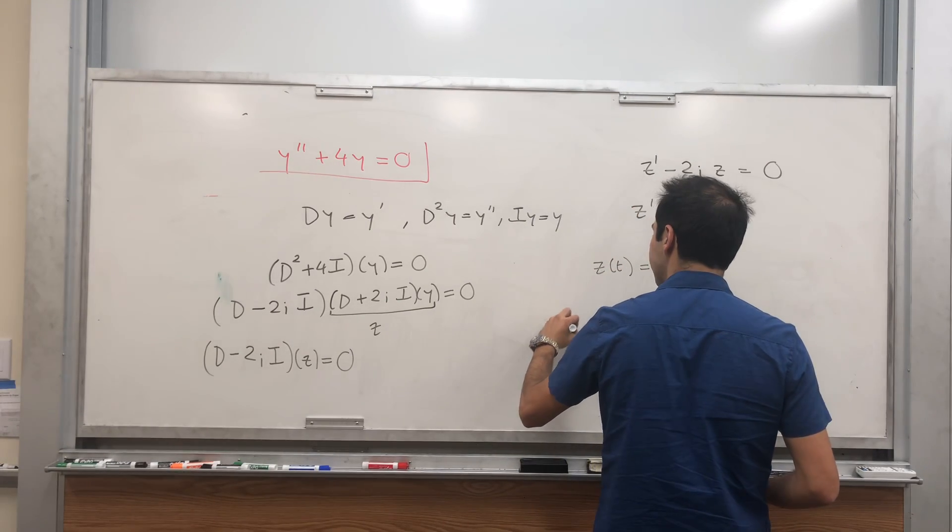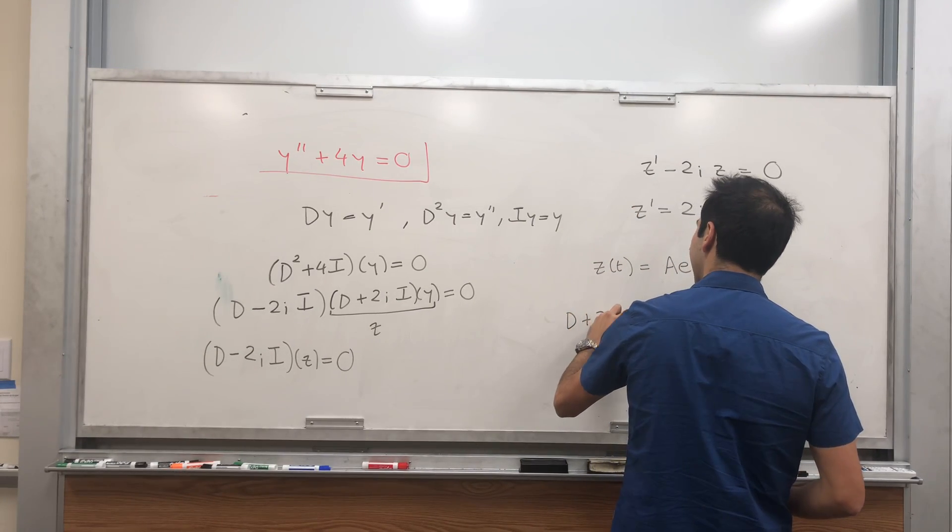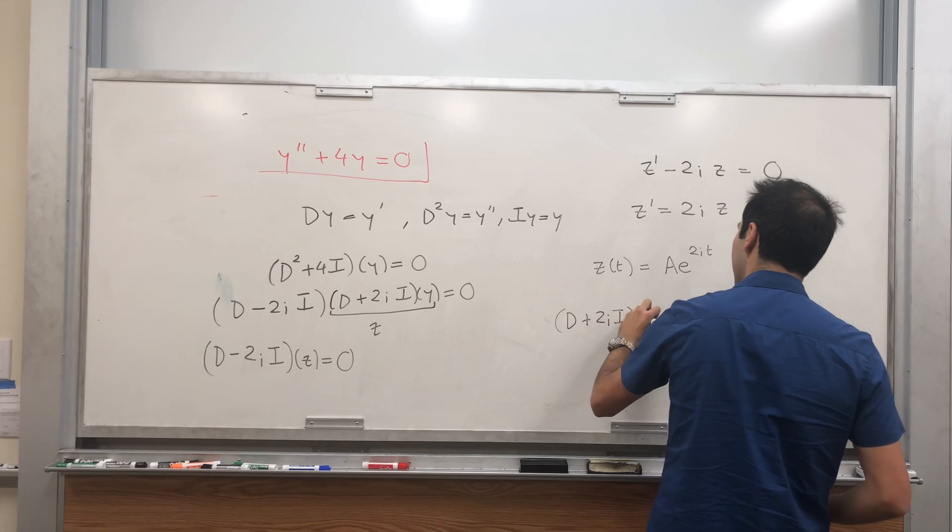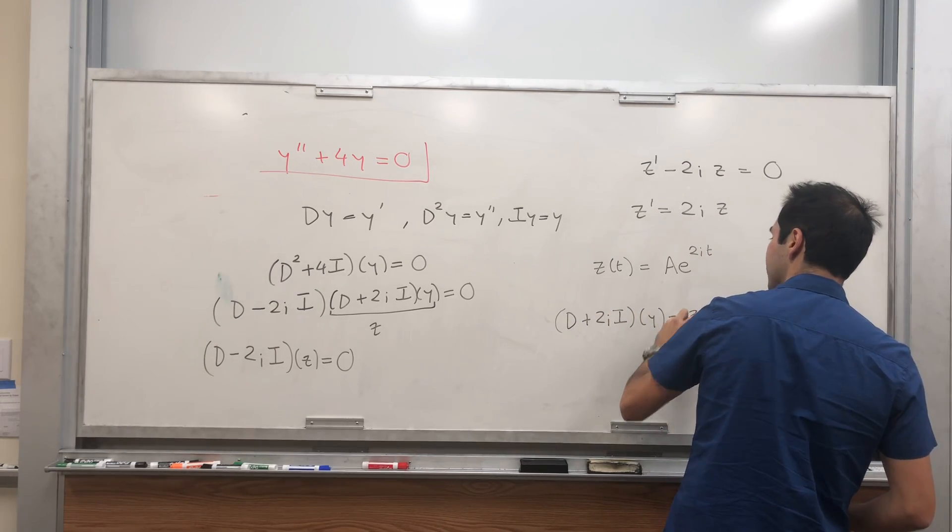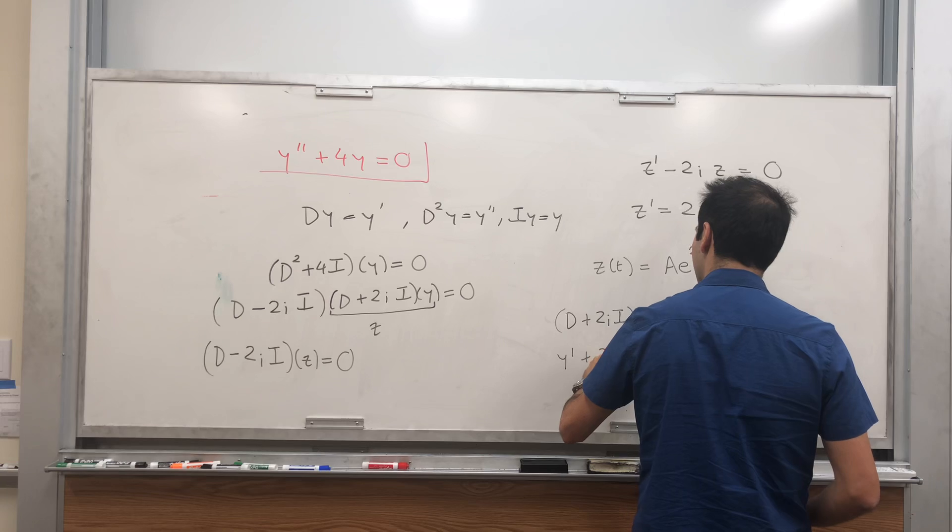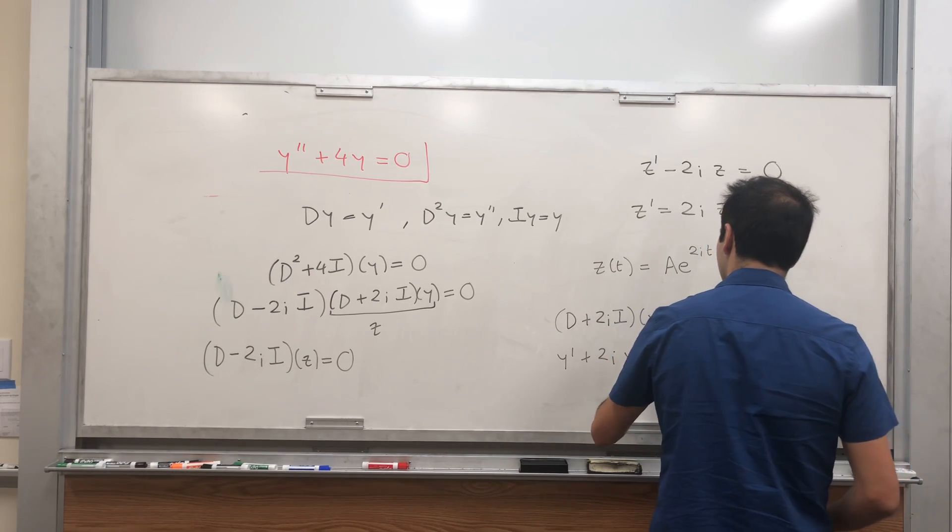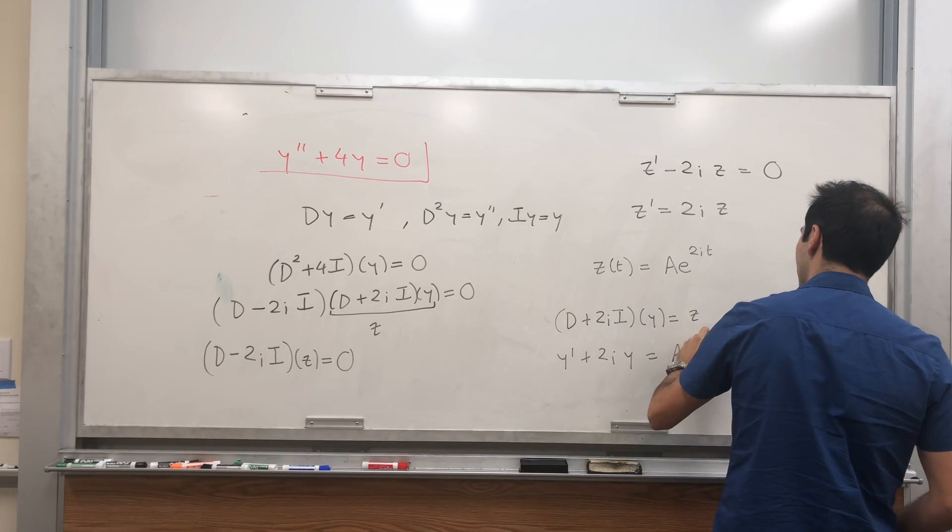And then how can we find y? Well, we have, remember, (D plus 2i)y equals z, and therefore y prime plus 2iy equals Ae to the 2it.